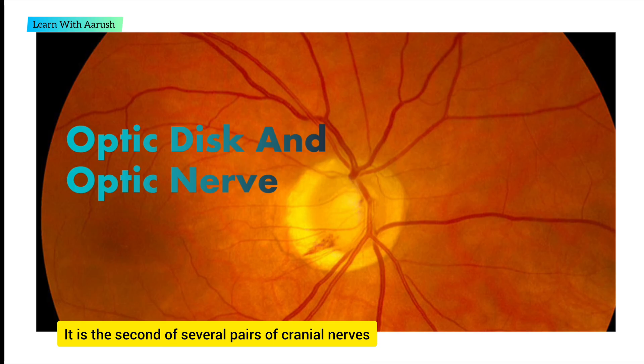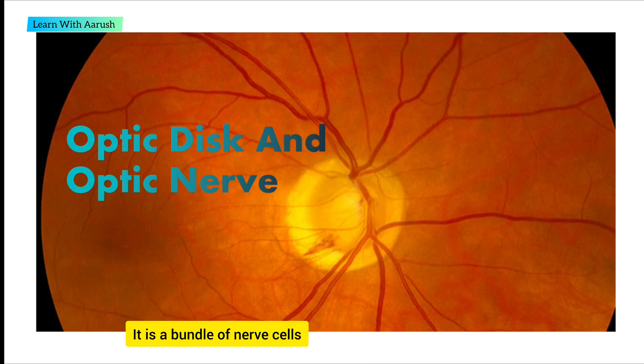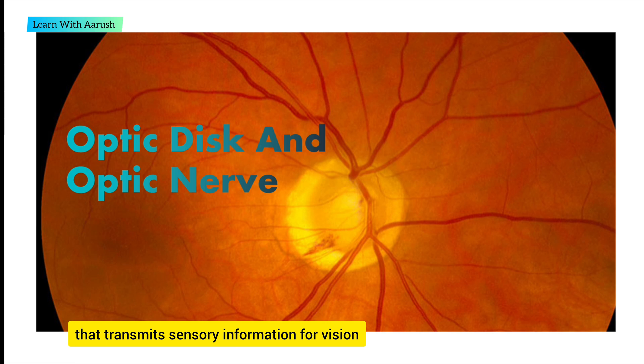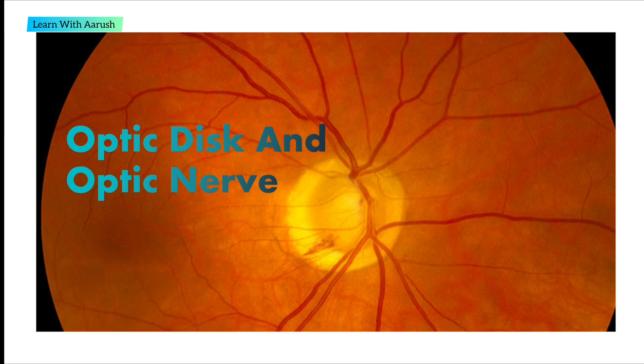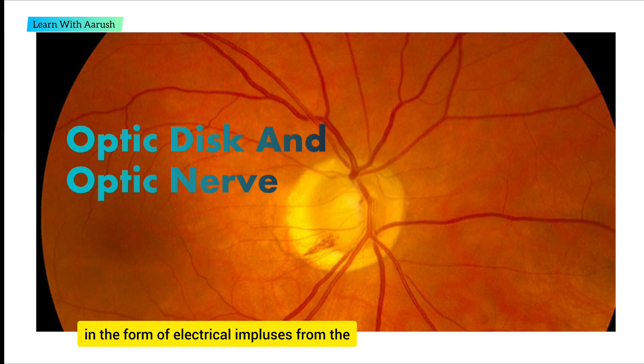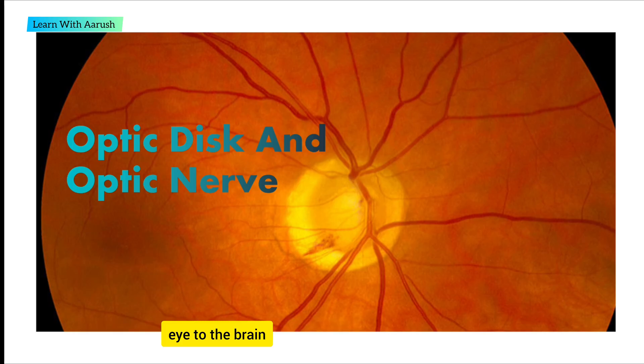It is a bundle of nerve cells that transmits sensory information for vision in the form of electrical impulses from the eye to the brain.